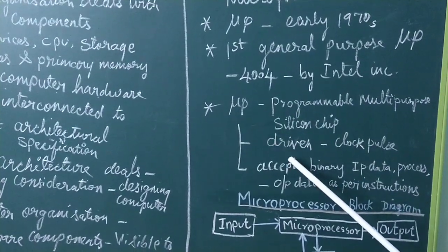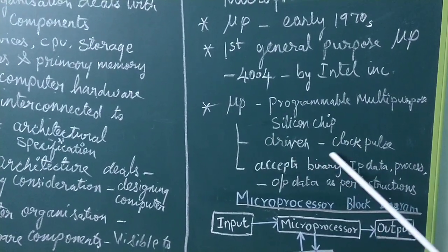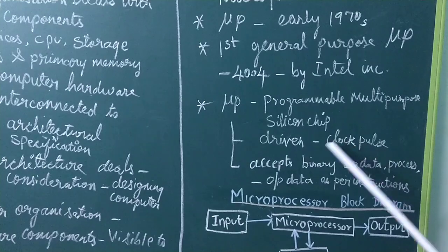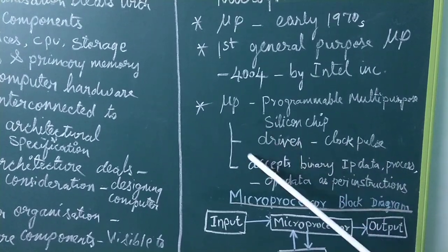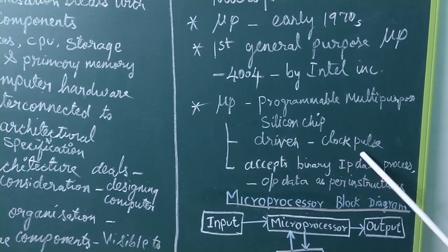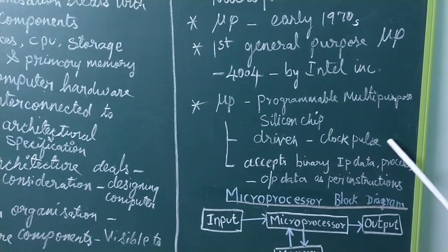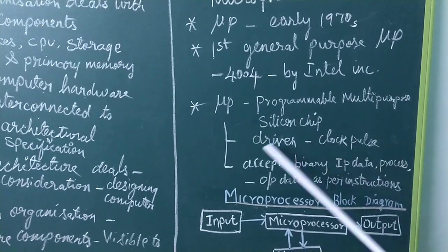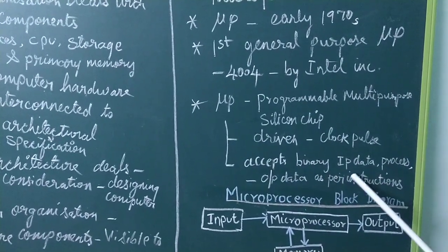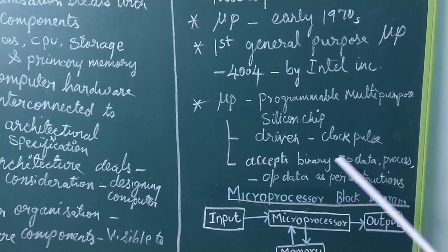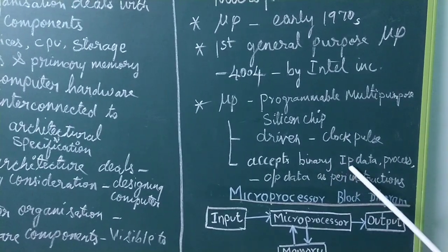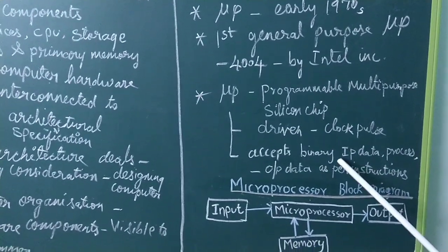The microprocessor is driven by a clock pulse, so its speed is determined by the clock pulse. It accepts binary data as input — that is zeros and ones. Input devices such as the keyboard and mouse provide data which is converted to zeros and ones and sent to the CPU.